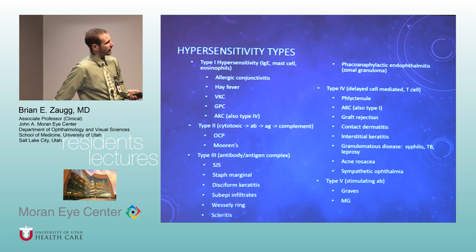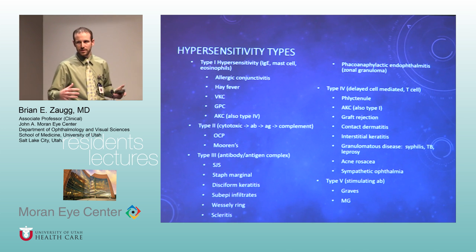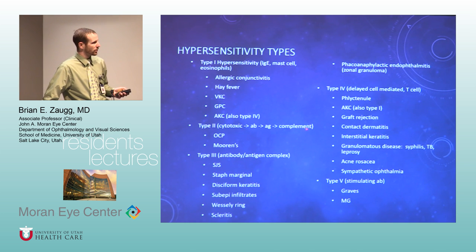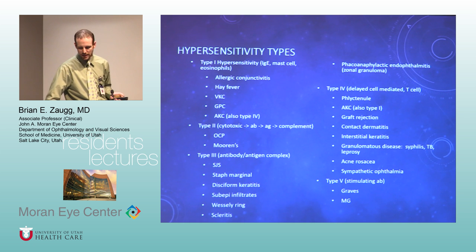Hypersensitivity reactions: type 1 is allergy, mast cell driven. Type 2 has antibodies, antigens, plus complement — OCP and Mooren's are classically type 2. Type 3 is antibodies and antigens without complement activation — phacoanaphylactic endophthalmitis is a classic type 3. Type 4 includes phlyctenules, AKC (can be delayed), graft rejections, granulomas, and sympathetic ophthalmia. There's also a type 5 category with stimulating antibodies — Graves' and myasthenia fall in there.